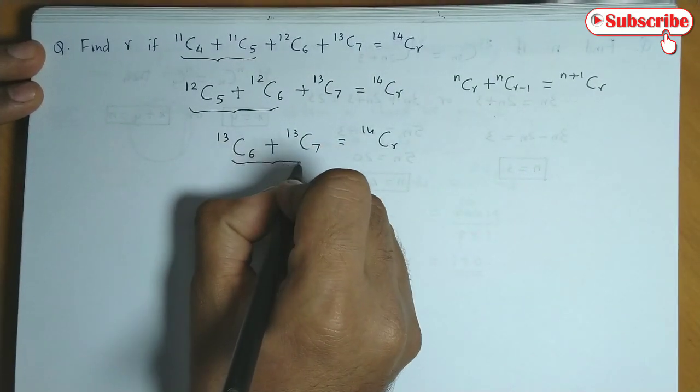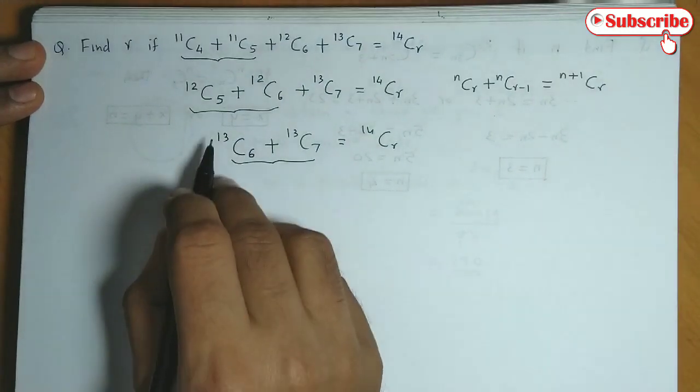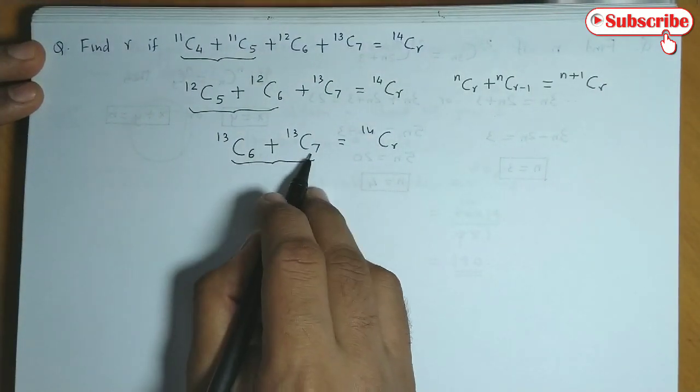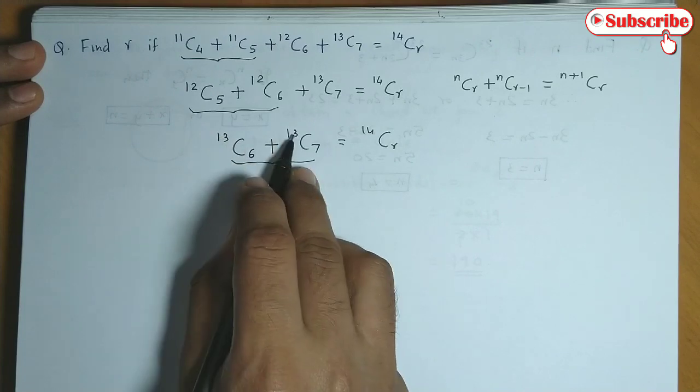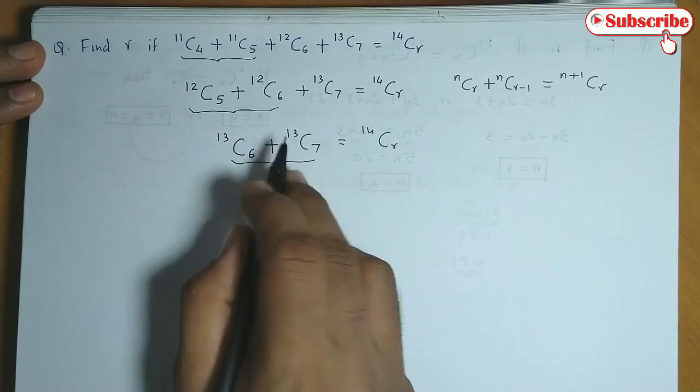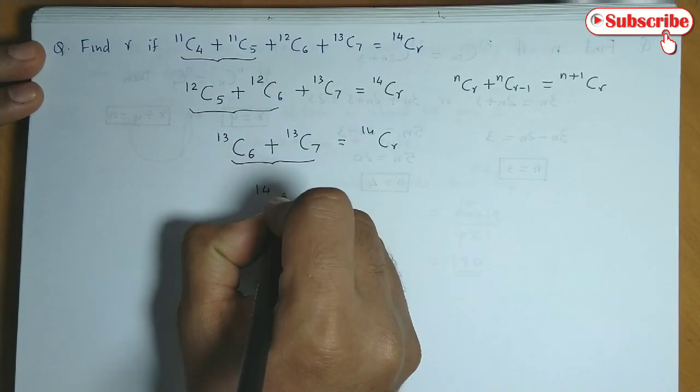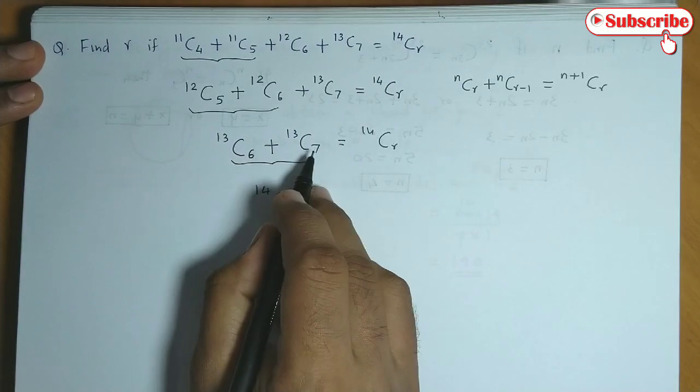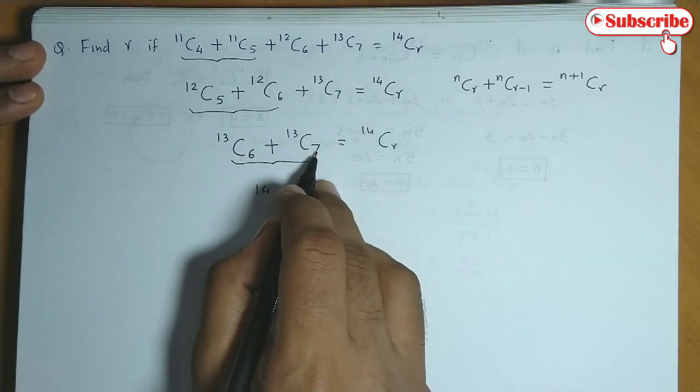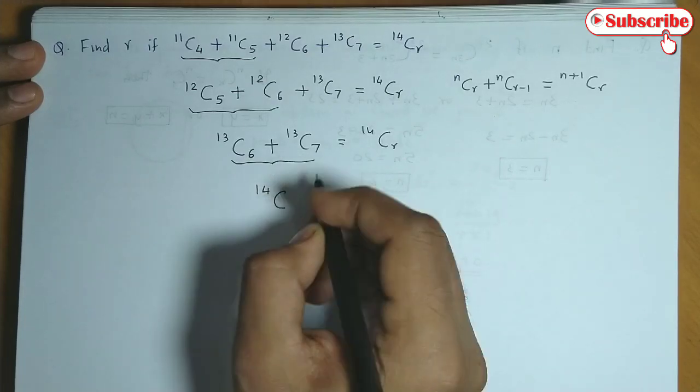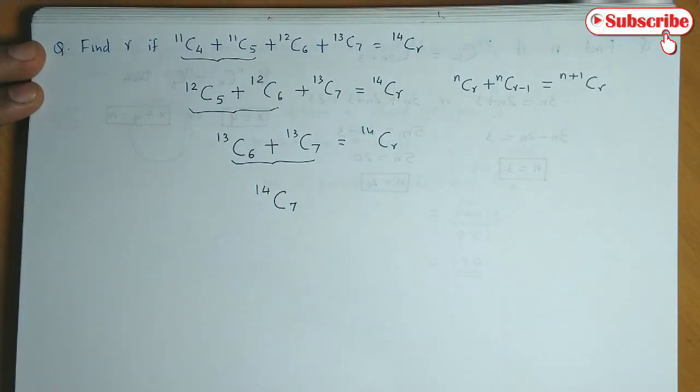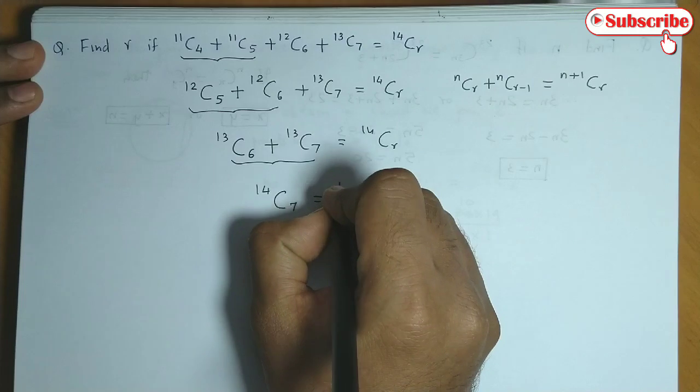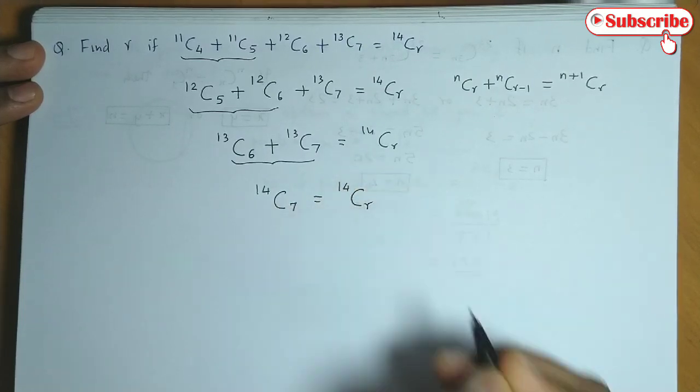Now again we could combine these two combinations. N is same and R has a difference of 1. So N changes to N plus 1, that is 13 becomes 14. And 6 or 7, we go with 7 because this is R and this is R minus 1. So we write the value of R over here, that is 7 is equal to 14CR.